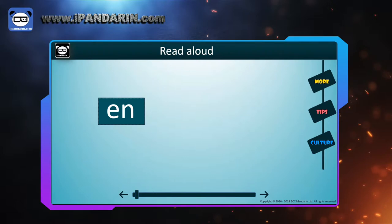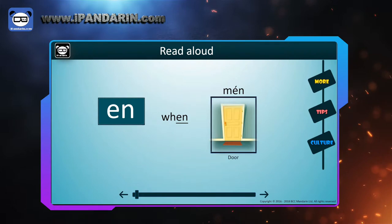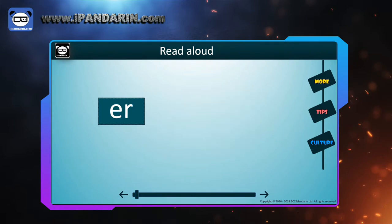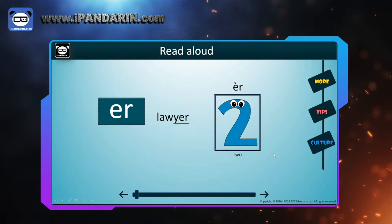EN — like 'en' in 'wen'. And in Chinese, 门 (mén), which means door. ER — like 'er' in 'lawyer'. And in Chinese, 二 (èr), which means two.